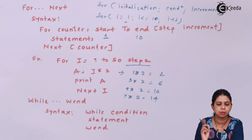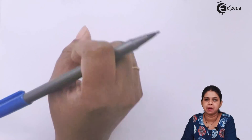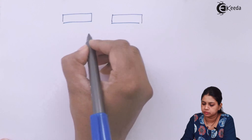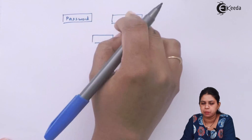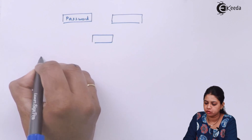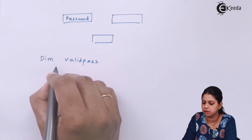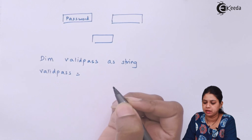Now we'll see a sample example using If-Else: a password validation screen, which will also appear in the practical exam for 11th standard. Create one label, one text box, and one command button. The label caption is 'Enter Password'. Declare a variable: Dim validPass As String, then set validPass equal to 'student'.